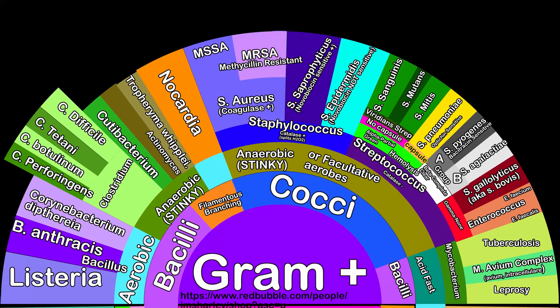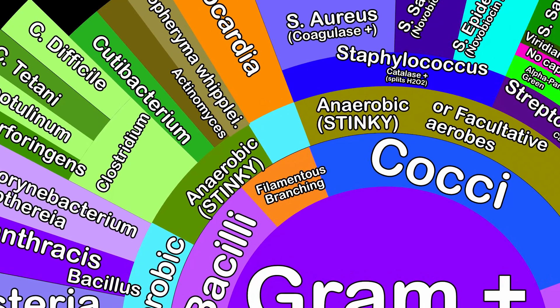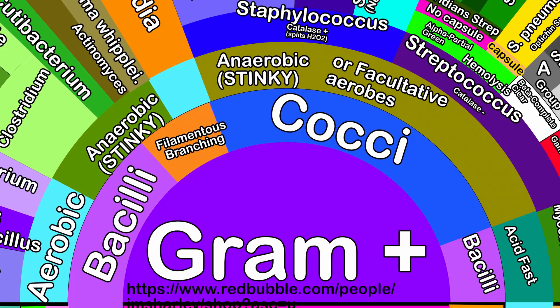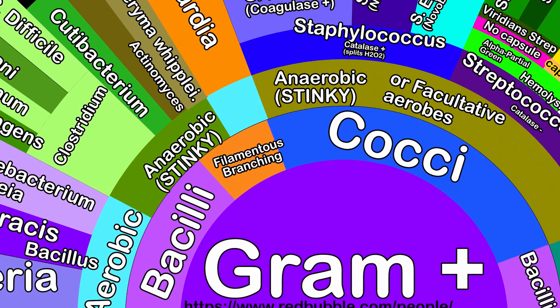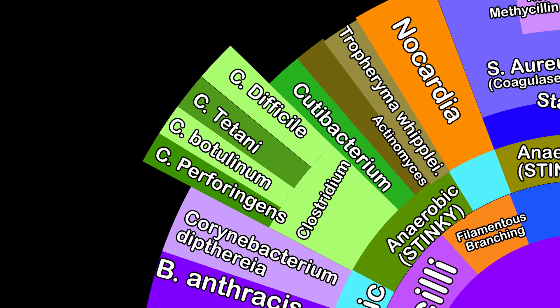The top half here is gram-positive bacteria. They are further divided by shape: bacillus, or rod-shaped; cocci, or round-shaped; and over here is a weird one, filamentous branching. Further dividing it, they can use oxygen or not — aerobic if they do, anaerobic if they do not. Now we are getting into specific classes, and I'll only mention some of the big ones.